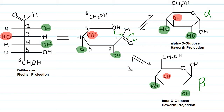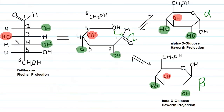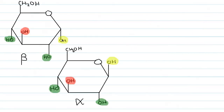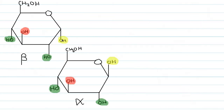So let's start to draw the chair conformation of D-glucose. These are the alpha and beta forms. The OH groups present on the left-hand side in the Fischer projection are present on the up side, and the OH groups present on the right-hand side are now present on the down side. This newly formed OH group is shown in yellow to distinguish it from the other OH groups.